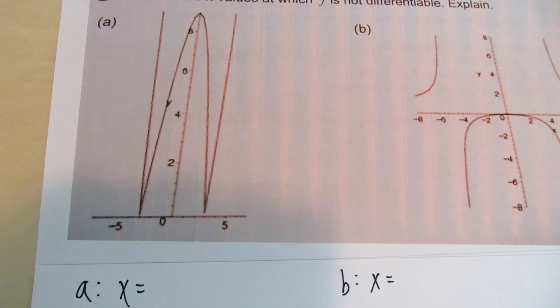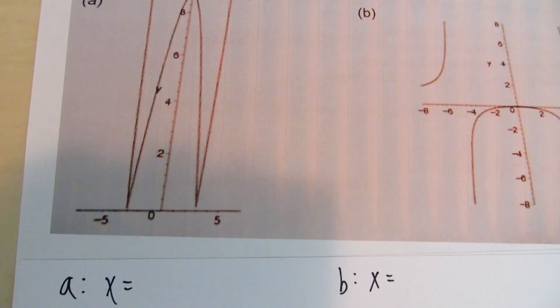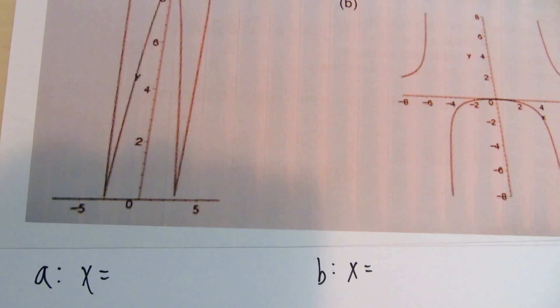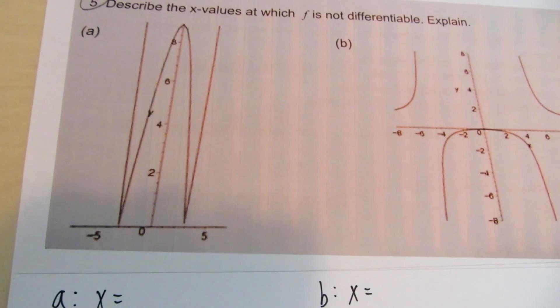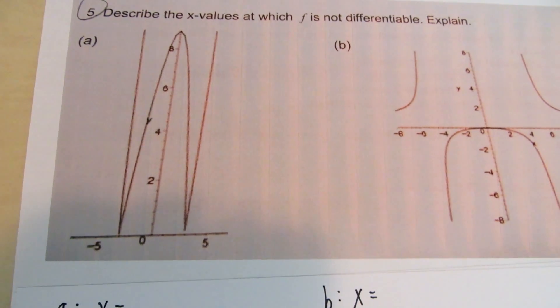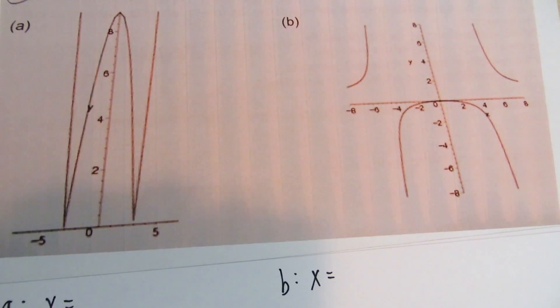Now the first thing you want to look for when finding where it is not differentiable is sharp turns. The second thing you want to look for is an undefined slope or a vertical tangent line. And the last thing you want to look for is to see if it's continuous. If it is any one of those three things, then it is not differentiable.